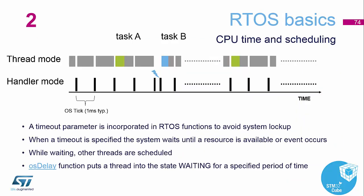Some more basics on the RTOS: we have different modes — thread mode and handler mode. Every time each task finishes its assigned time parameter, it moves on to the next thread. You can set things so that they wait for other threads to be actioned as and when they're needed, and you can play around with the functioning, signaling, and messaging within the RTOS itself.